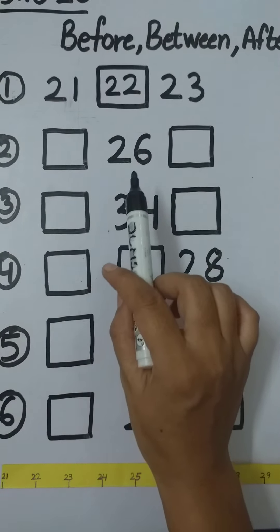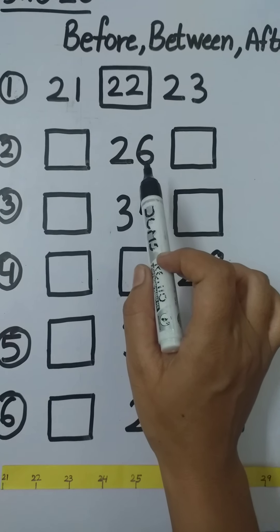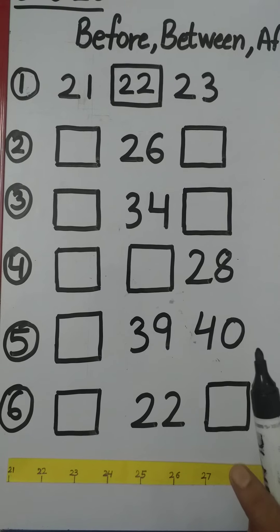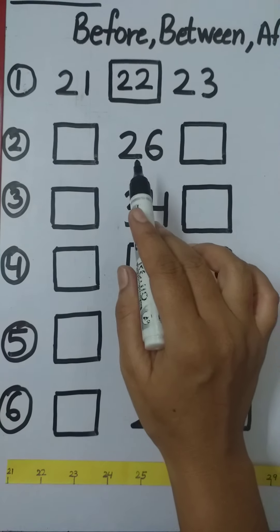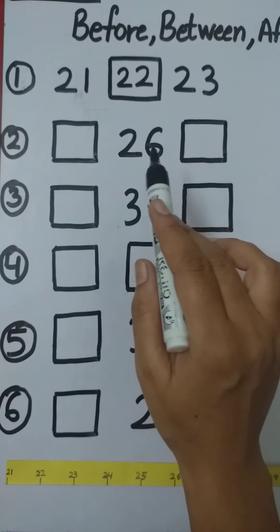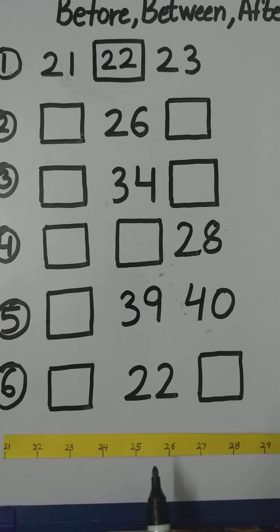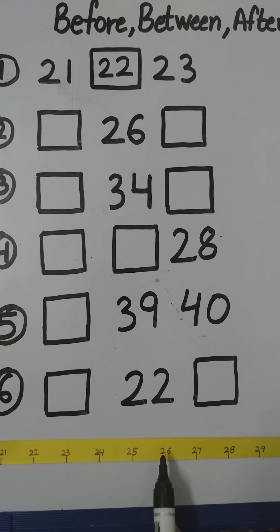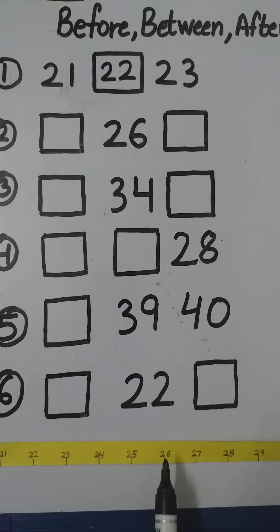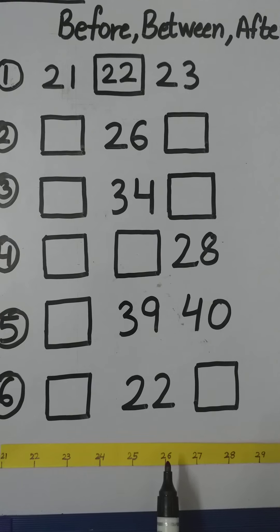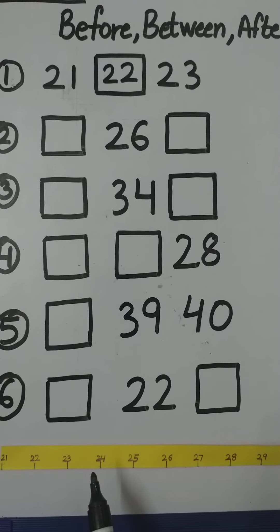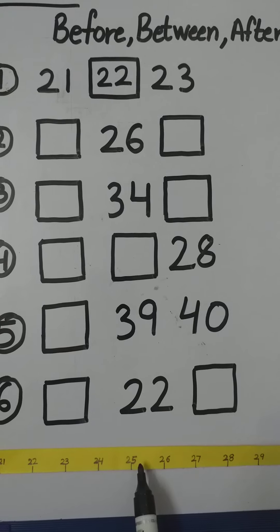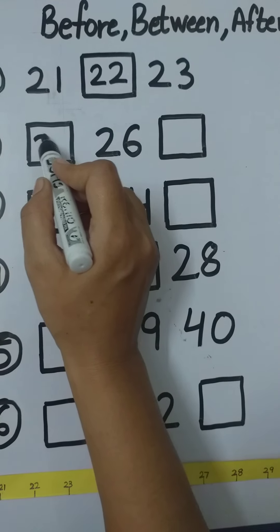Now next is number 26. So what we have to do? We have to find the number which comes before 26 and comes after 26. So let's find out. Where is number 26? So what comes before 26? In the before number, we move towards the left hand side. So what comes before number 26? 25. So we have to write here 25.